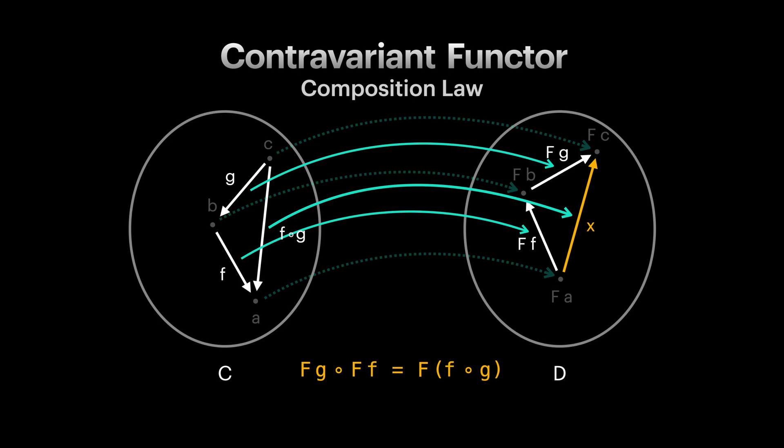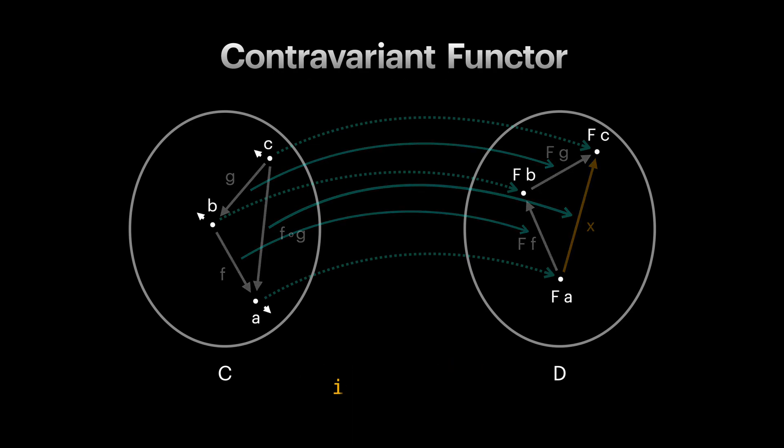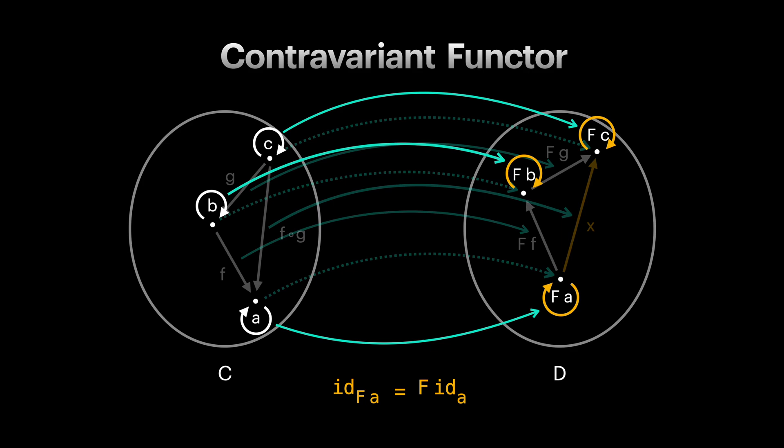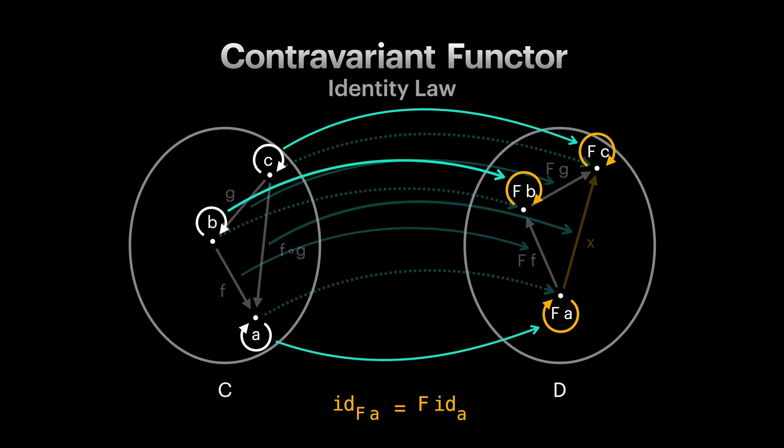Pretty simple, right? Our next functor law states that identity arrows which all objects have should map to their corresponding identity arrows in the other category. And this is called the identity law, which is the same for covariant and contravariant functors.